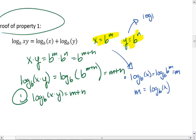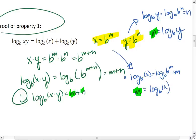Similarly, log base b of y equals log base b of b to the n, which equals n. So n equals log base b of y. We can substitute the n and the m in for our equation here, giving us log base b of x times y equals log base b of x plus log base b of y.